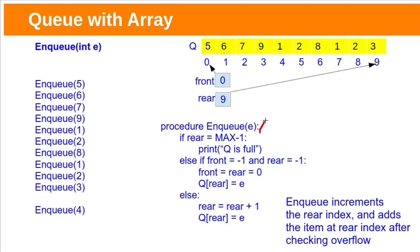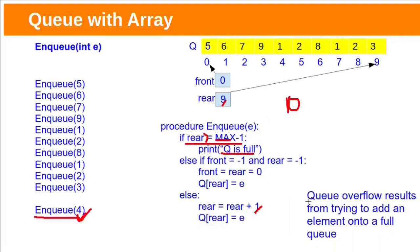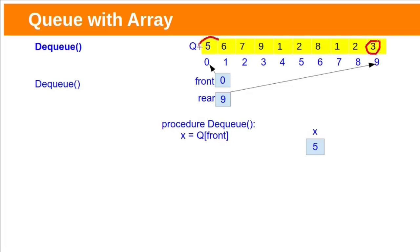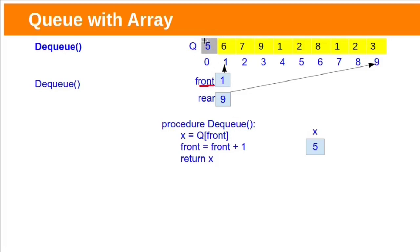Overflow occurs when we try to add an element to an already full queue. If we want to remove one element from the queue, we use the Dequeue operation. If the queue is not empty, Dequeue should return the least recently added item — 5 is the least recently added item, maintained by variable Front. So Dequeue returns the element at index Front, then increments Front because 5 is removed and the least recent item is now 6, so Front moves to index 1. The element at the previous Front (index 0), stored in variable x, is returned.